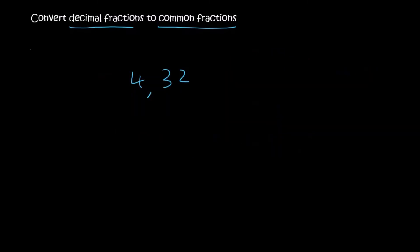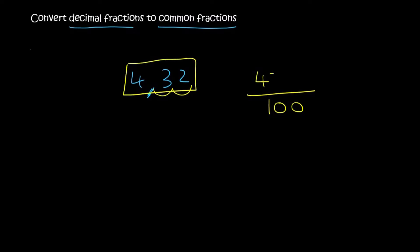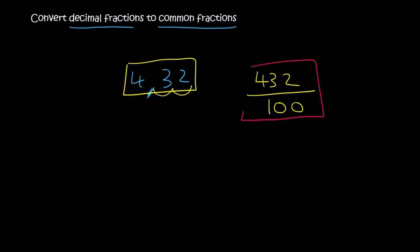If we have 4.32, all you have to do is imagine taking that decimal back — that's two places. So the number at the bottom will be 100, and then you literally just write this number at the top: 432 over 100. Because you can imagine that in the previous lesson you would move it two decimal places, giving you 4.32.